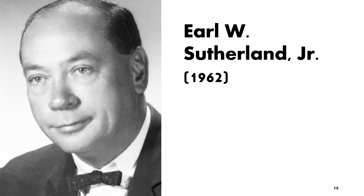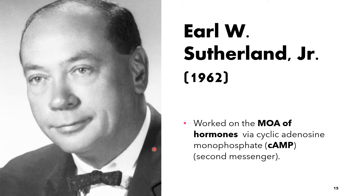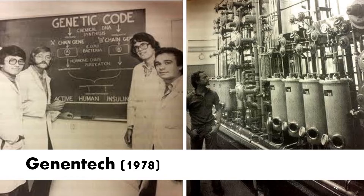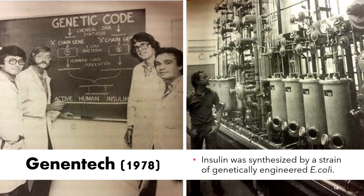We also have Earl W. Sutherland Jr., an American pharmacologist and biochemist. He won the Nobel Prize in Physiology or Medicine in the year 1971 for his discoveries concerning the mechanisms of action of hormones, especially epinephrine, via second messengers — namely cyclic adenosine monophosphate, or cyclic AMP (cAMP). Another historical figure is the American biotechnology corporation Genentech Incorporated, the first biotechnology company in the world. In the year 1978, recombinant human insulin was first produced in E. coli by Genentech.